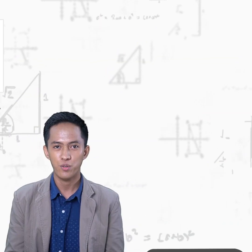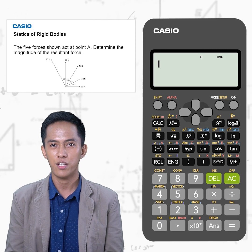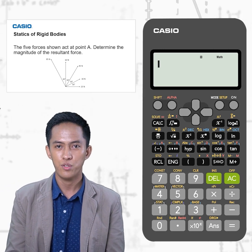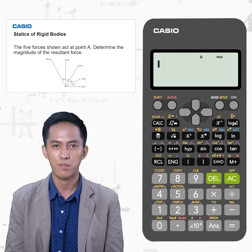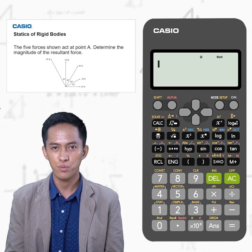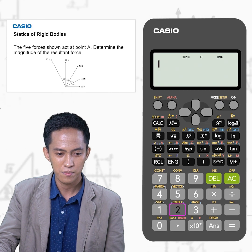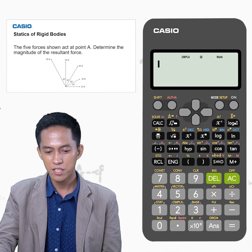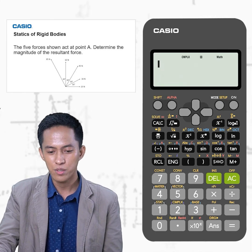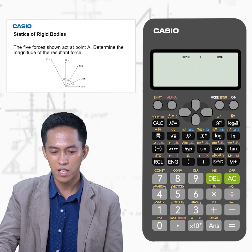The five forces shown act at point A. Determine the magnitude of the resultant force. To determine the resultant force using the Casio FX 570S Plus 2nd Edition, first press Mode 2 Complex. As we can see in our problem, the 25N force is at 0 degrees with respect to the positive x-axis.